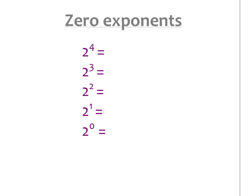The other rule that we're going to go through is when you have a zero exponent. Before we go through what happens when you do have a zero exponent, I want you to take a look at this pattern. When I do 2 to the fourth power, I get 16. 2 to the third power, I get 8. 2 to the second power is 4. 2 to the first power — anything to the first power is going to be itself. See as I go from 16 to 8, 8 to 4, 4 to 2, each time I'm dividing by 2.